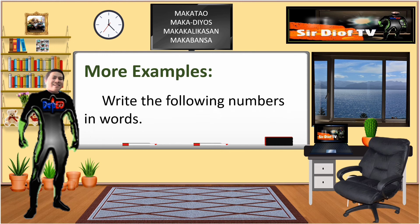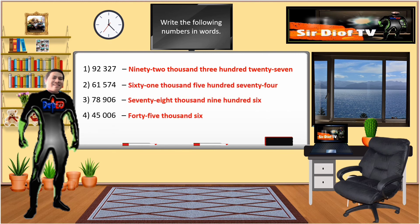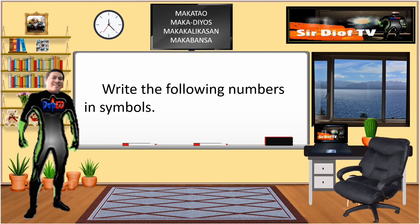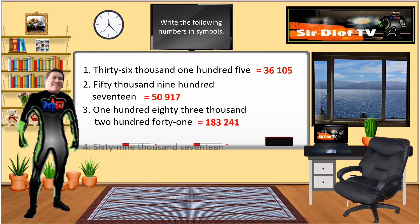More examples. Write the following numbers in words: Number 1: 92,327; Number 2: 61,574; Number 3: 78,906; Number 4: 45,006. Compare them using relation symbols. Write the following numbers in symbols: Number 1: 36,105; Number 2: 50,917; Number 3: 83,241; Number 4: 69,017.